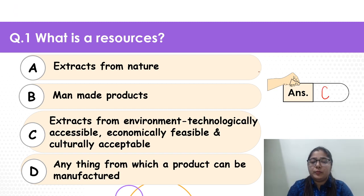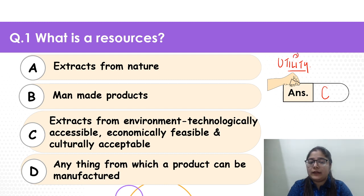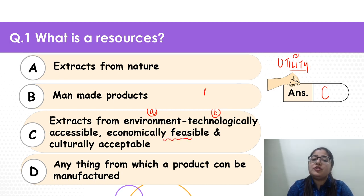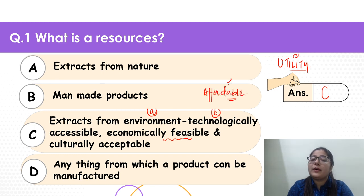The correct answer is definitely option C. What is a resource? A resource is anything that possesses some utility — it should have a certain kind of use to mankind. All the extracts that we get from the environment have to be technologically accessible, because if we cannot access them, we will not be able to have any utility. They should also be affordable — if a resource is beyond your reach or capacity, it won't be a resource for you.